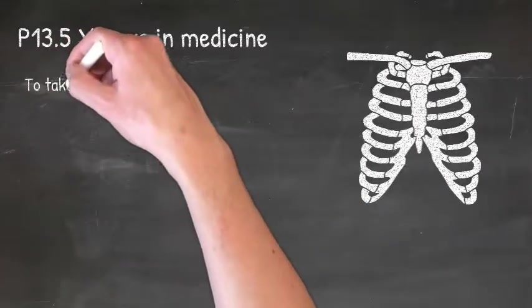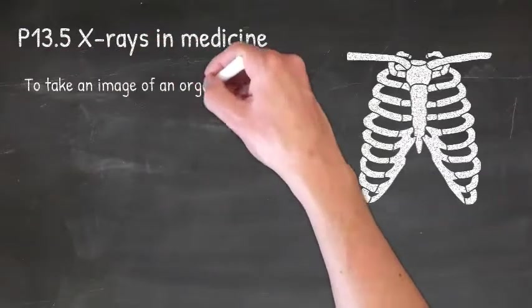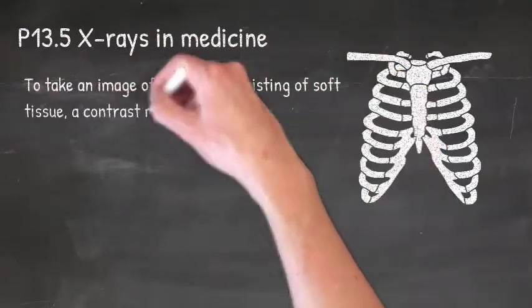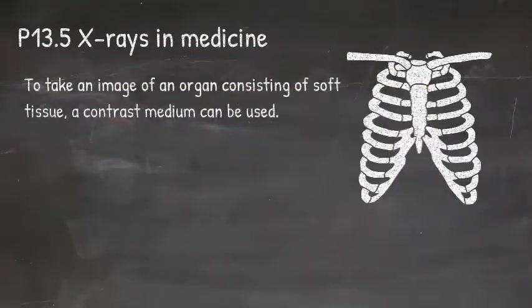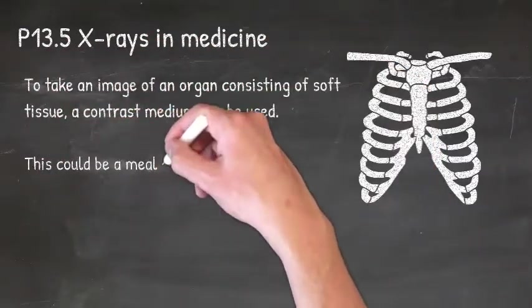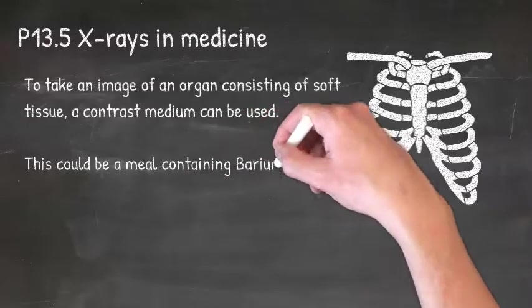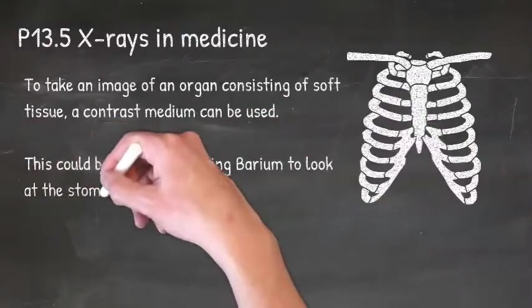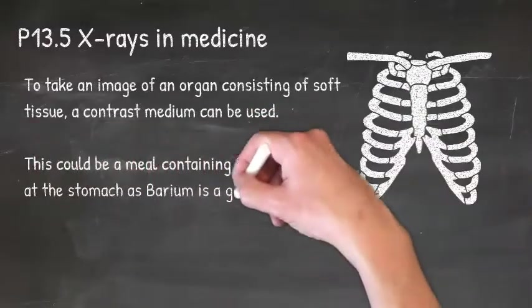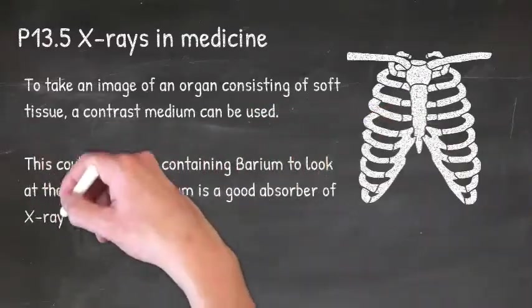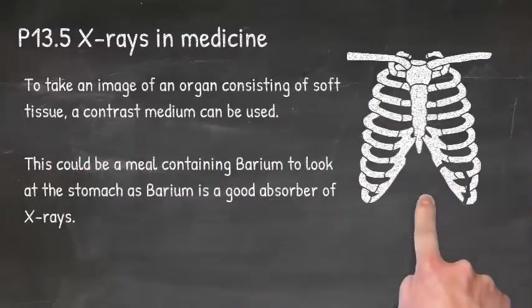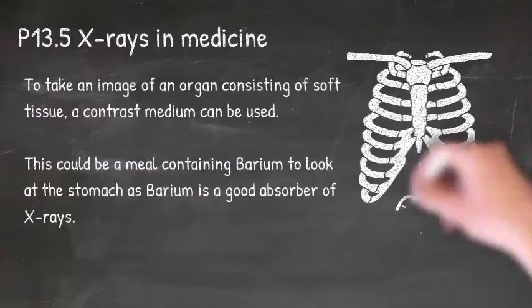To take an image of an organ consisting of soft tissue, a contrast medium can be used. This could be a meal containing barium to look at the stomach, as barium is a good absorber of X-rays.